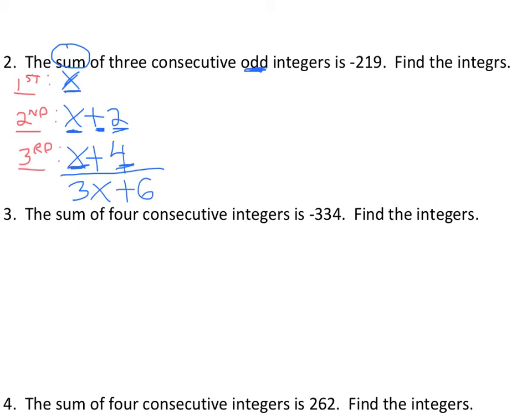And then it's saying, all right, sum of three consecutive odd integers, which is this, 3x plus 6. It's saying this is negative 219. It's the same thing, it's saying equals. So we set it equal to negative 219.